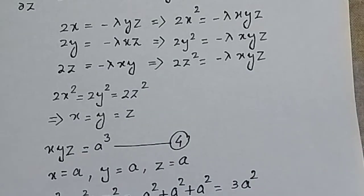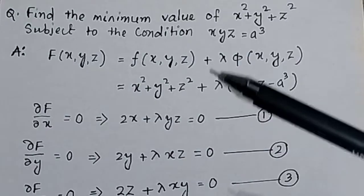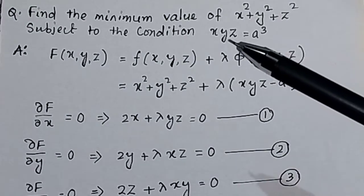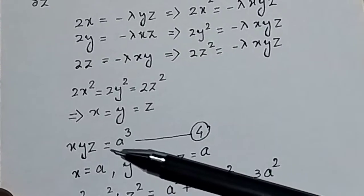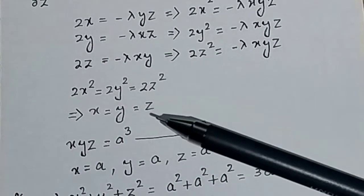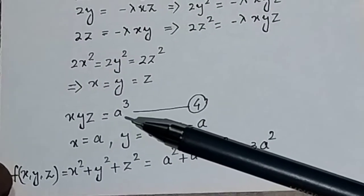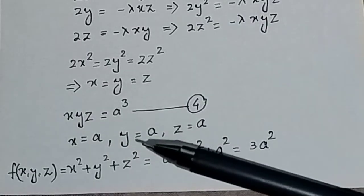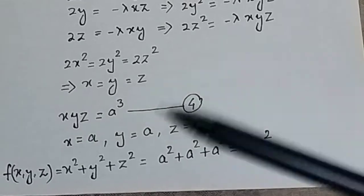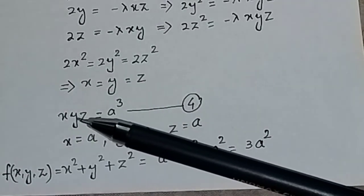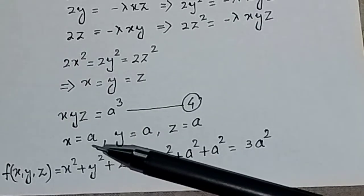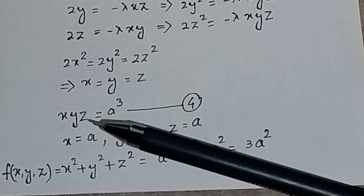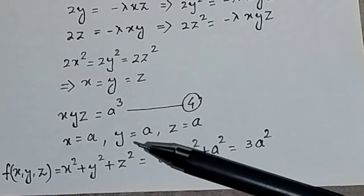Now we substitute x = y = z into the constraint equation xyz = a³. If x = y = z, then xyz = x·x·x = x³ = a³, so x = a. Similarly, substituting gives y³ = a³, so y = a, and z³ = a³, so z = a.